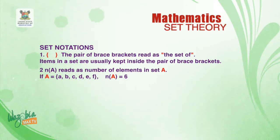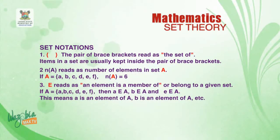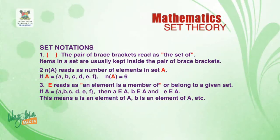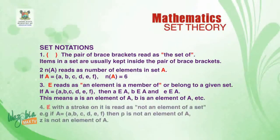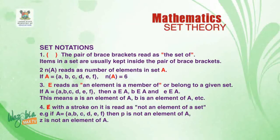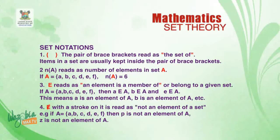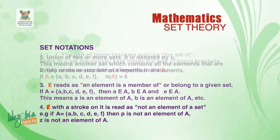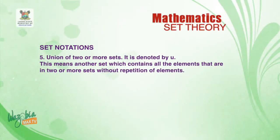Number three — capital E, which reads as 'is an element of' or 'is a member of' a given set. Number four — capital A with a stroke, which is the reverse of number three; it means that an element is not a member of a given set.